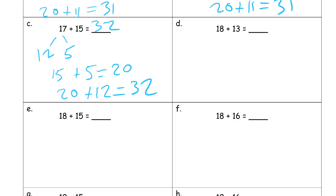18 plus 13. Let's see. I can get a 2 out of that 13 and the rest would be 11. And here's another 11. Wow. All these 11s and 12s. All right. So the 18 plus 2 is 20. And 20 plus 11 is 31.